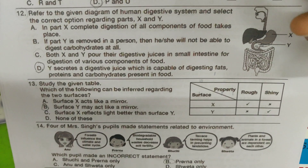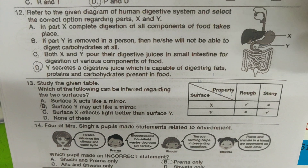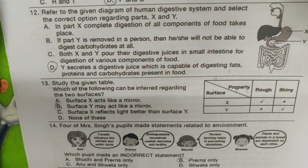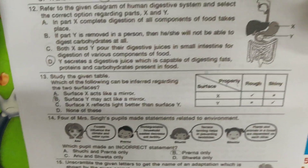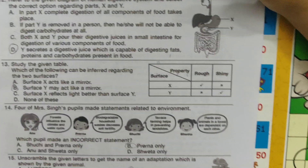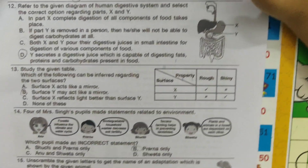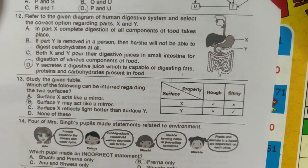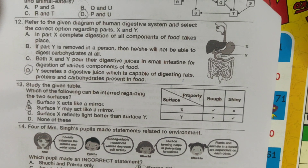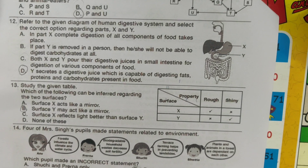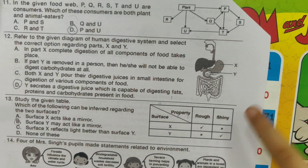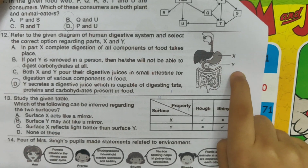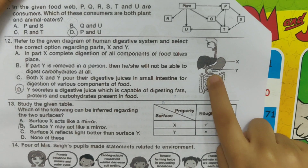Refer to the given diagram of the human digestive system and select the correct option regarding X and Y. The correct option is: Y secretes a digestive juice which is capable of digesting fats, proteins, and carbohydrates present in food. X looks like the stomach and Y looks like the pancreas.